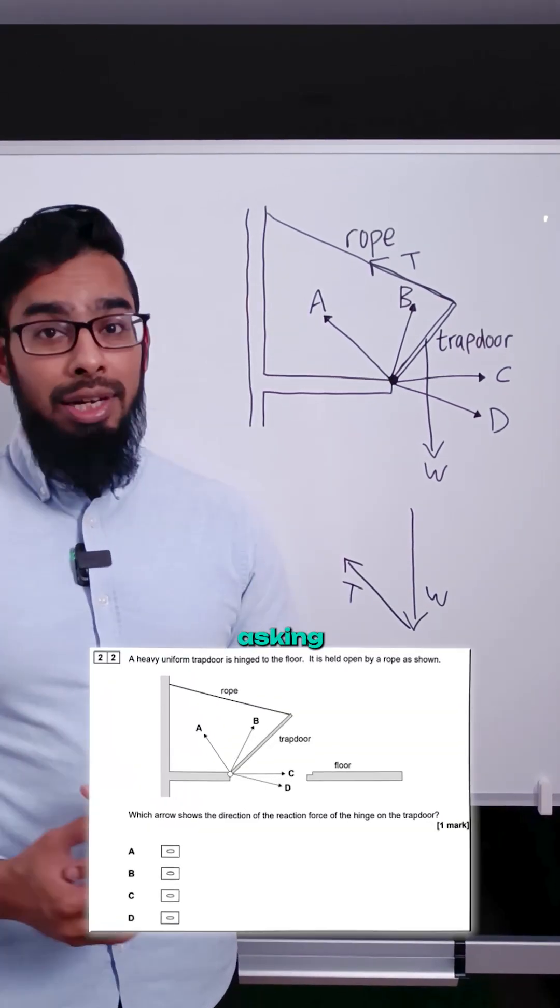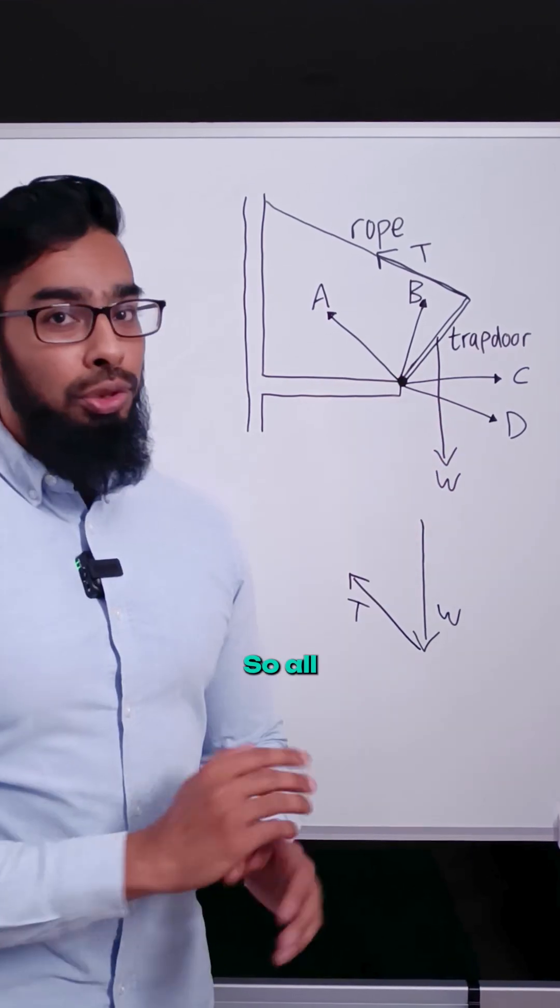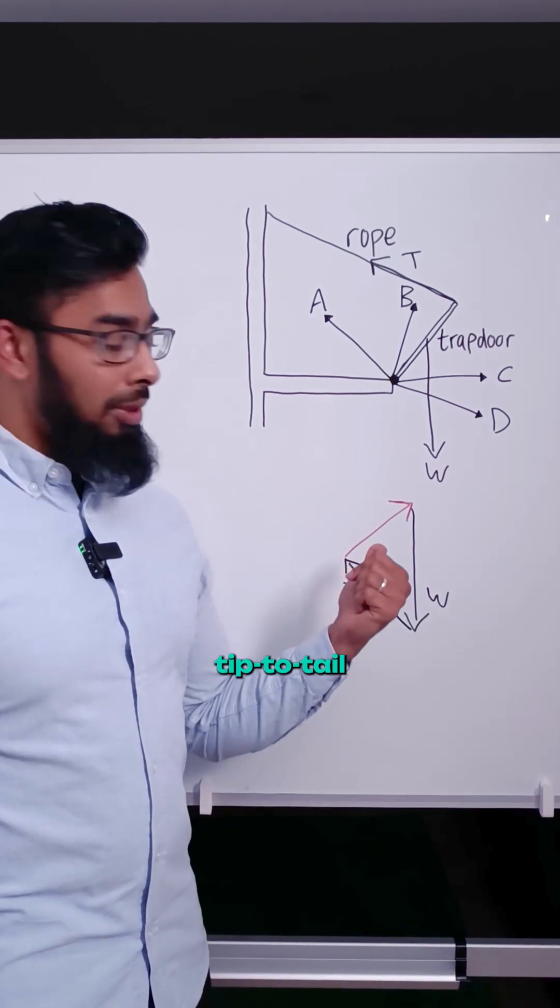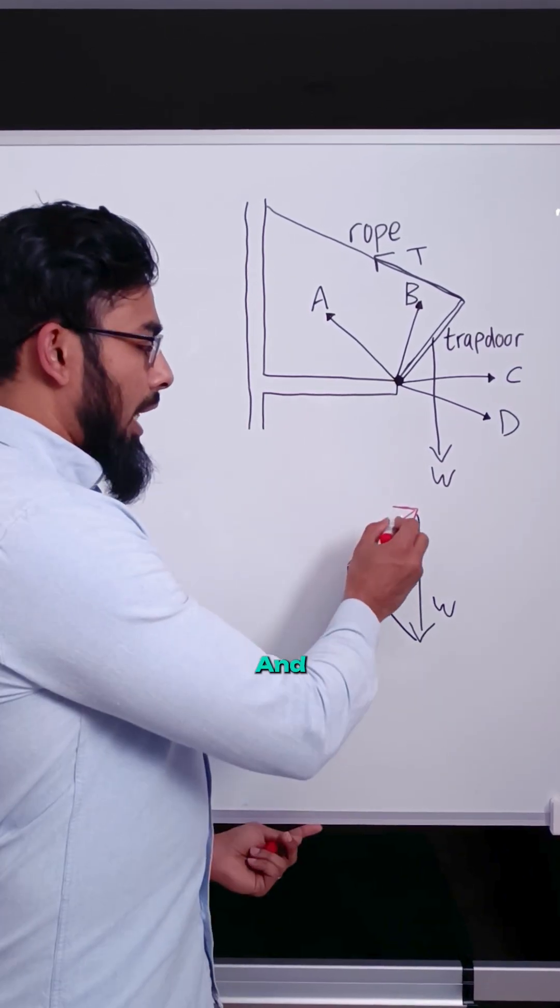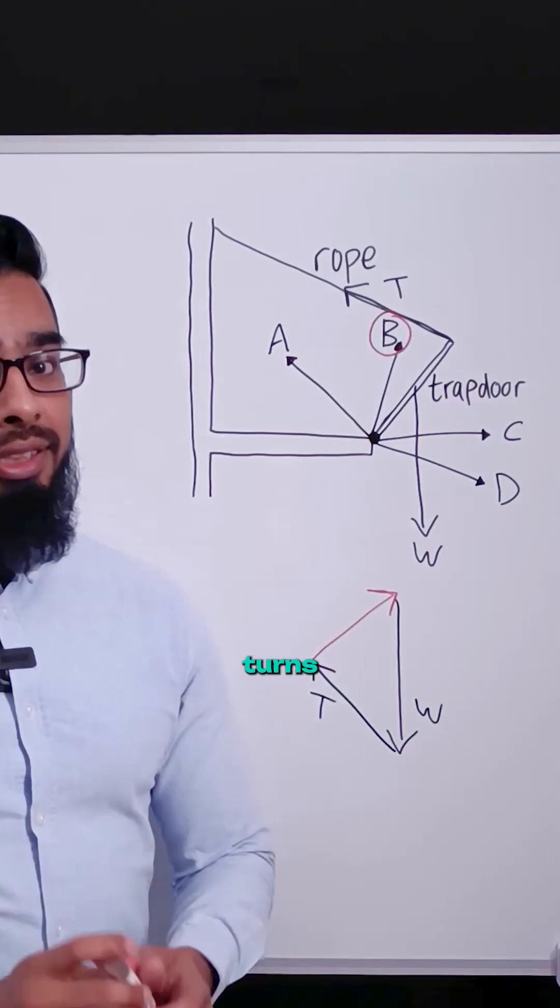So the final force, what the question is asking for, is which is the reaction force: a, b, c, or d. So all we need to do is complete this shape, this triangle. And as you can see, all the arrows are now tip-to-tail and we found our missing force. If you look at the direction of this arrow, which one does it most closely match with? So the answer turns out to be b.